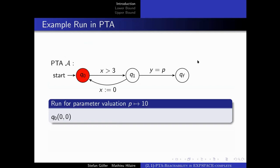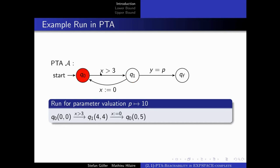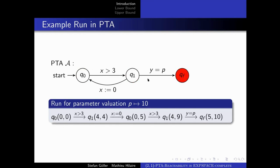In this example of a PTA, if you assign parameter P to 10, your run could start in configuration Q0 with clock assignment assigning zero to both clocks X and Y. After waiting four units of time you go to Q1 taking the X > 3 transition. Then after waiting one unit of time you go back to Q0 resetting X to 0. After waiting four units again you take the transition back to Q1, and then after one more unit you take the Y = P transition, as Y holds value 10, which equals the valuation of parameter P.